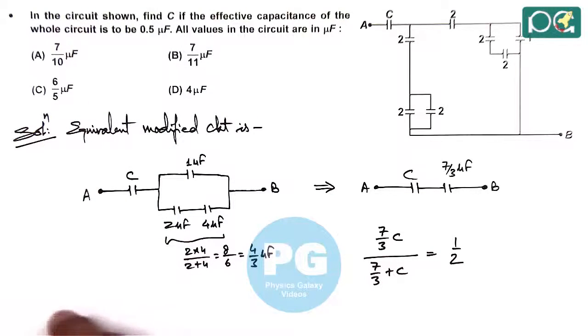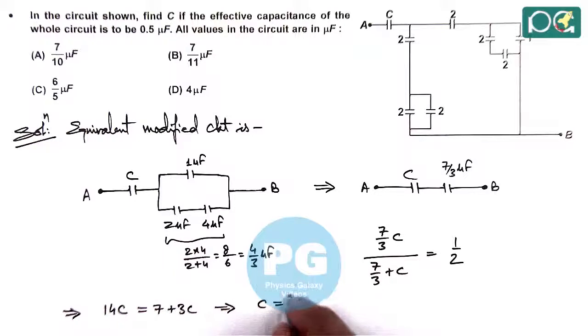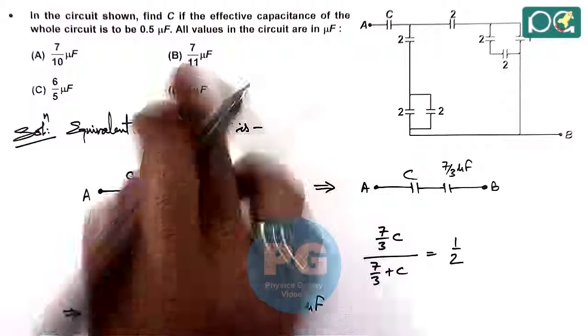This gives us 14C = 7 + 3C, which gives C = 7/11 microfarad, which matches with option B.